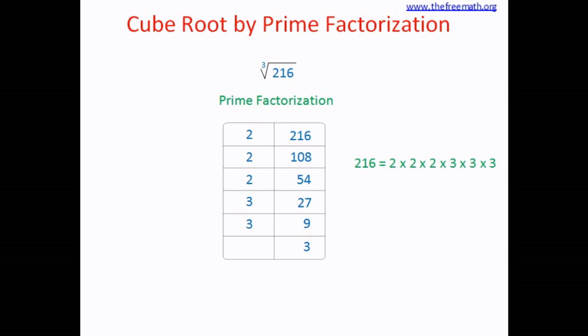So the prime factors of 216 are 2 multiplied by 2 multiplied by 2 multiplied by 3 multiplied by 3 multiplied by 3.